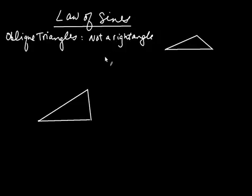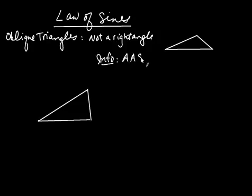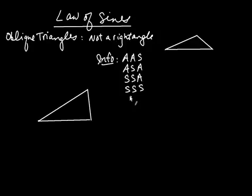If you don't have a right angle, you need some information. The possible information you could have would be classified in the following ways: AAS, ASA, SSA, SSS, and SAS. The letter S stands for side of a triangle and A stands for angle.